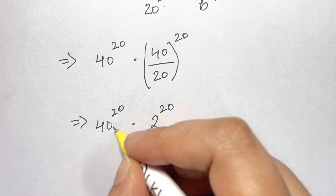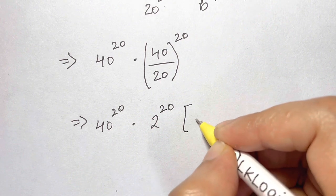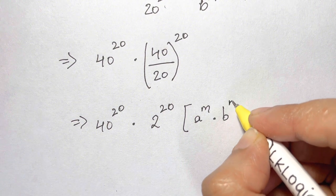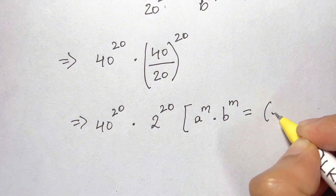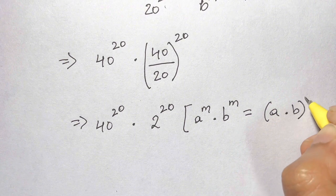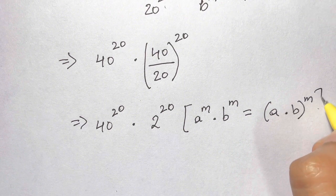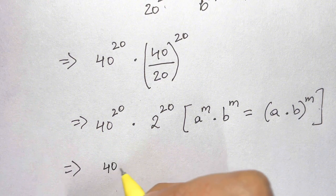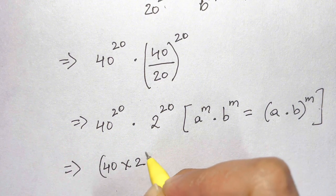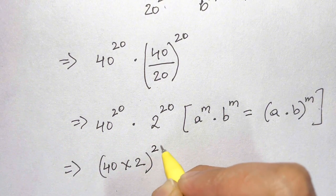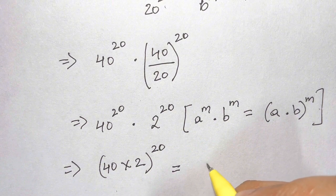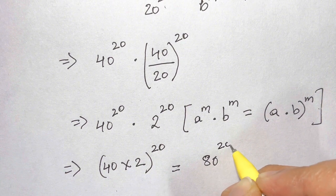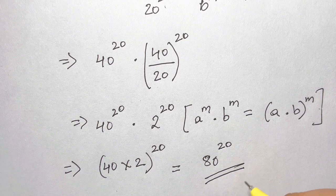Now we apply another law: a to the power of m times b to the power of m equals a times b, whole to the power of m. Applying this gives us 40 times 2, whole to the power of 20. And 40 times 2 is 80, so the answer is 80 to the power of 20.